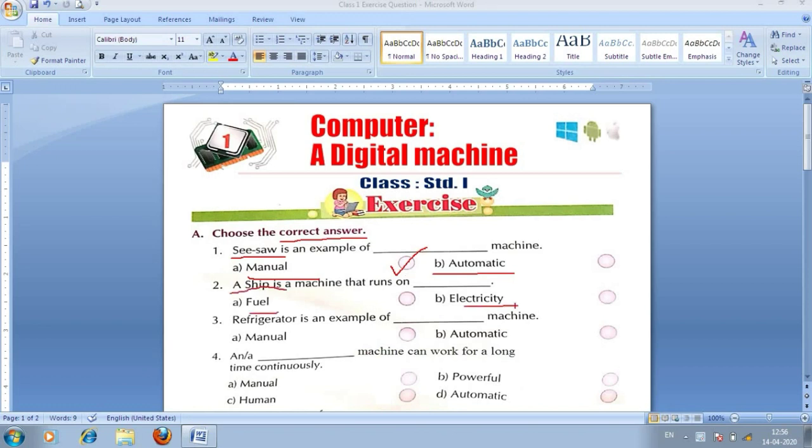Second number one is, a ship is a machine that runs on dash - a fuel, b electricity. Samundri jahaj kis pe chalta hai. Fuel pe chalta hai. Toh, samundri jahaj fuel pe chalta hai. It means, hamara a option sahi hai.